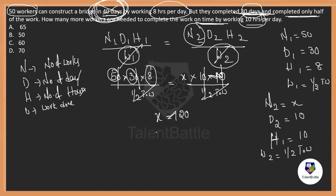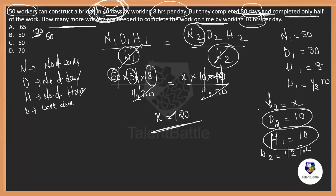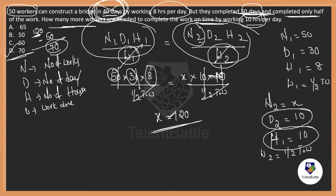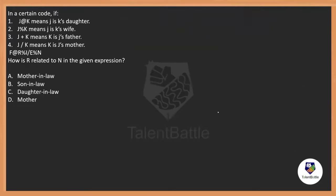In the second case, 120 people are required to finish the work in 10 days working 10 hours a day. Already 50 people are there, so how many more are needed? 120 minus 50 equals 70 more workers. So the answer is option D — 70 more people are required, and 120 total people should be there in the second case.